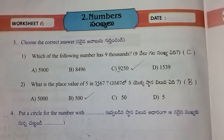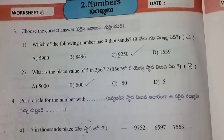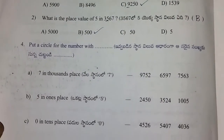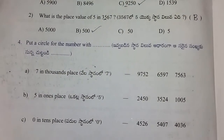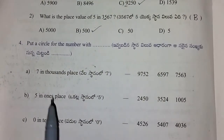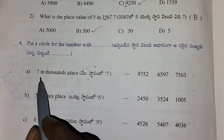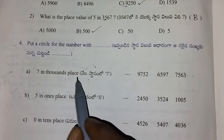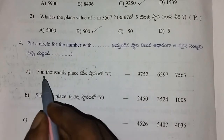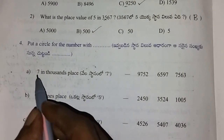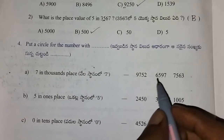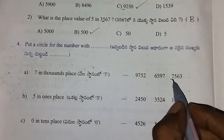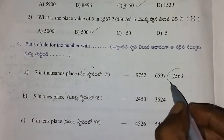Next. In the thousands place, 7 is the number. The place value of 7 in the thousands place is 7,000.